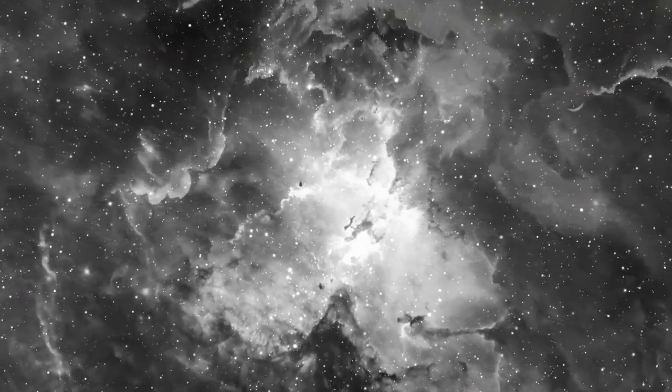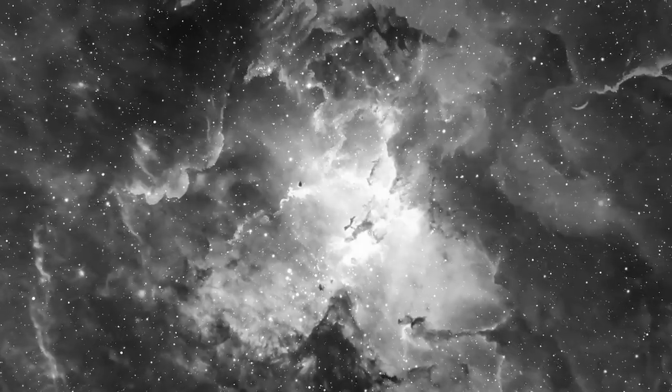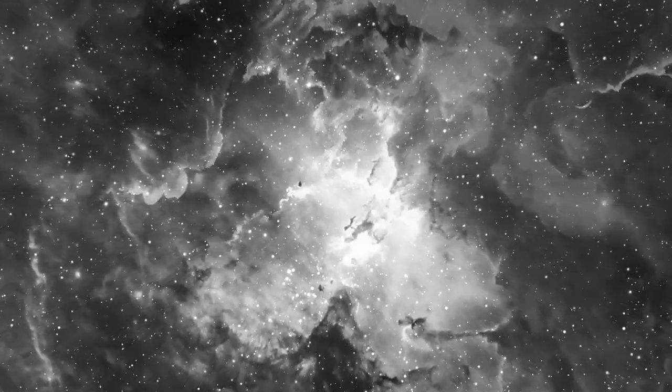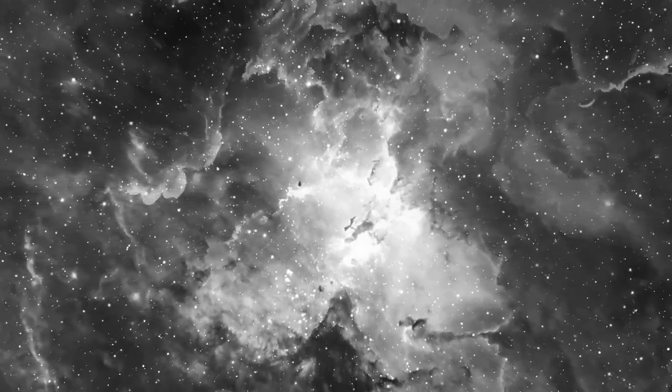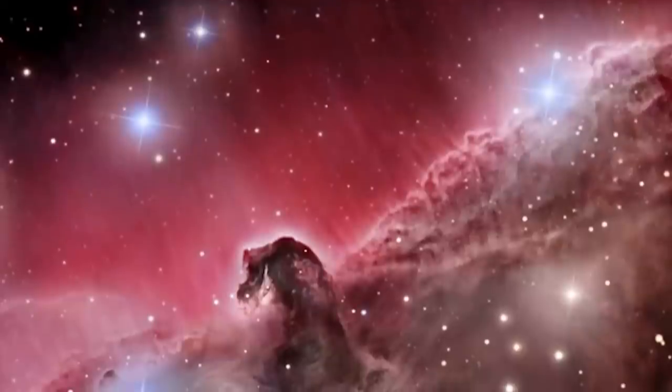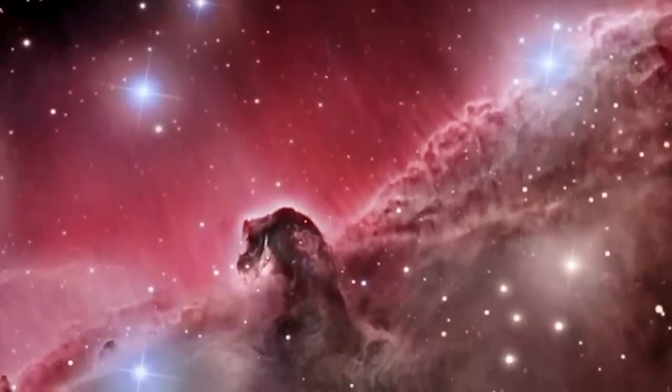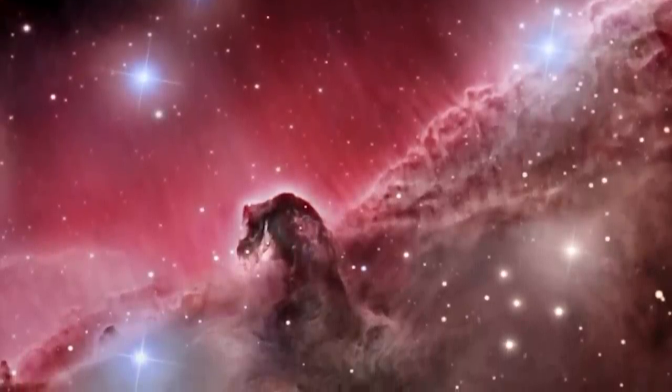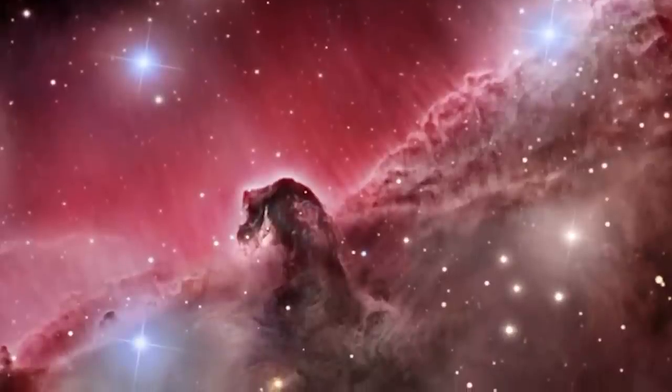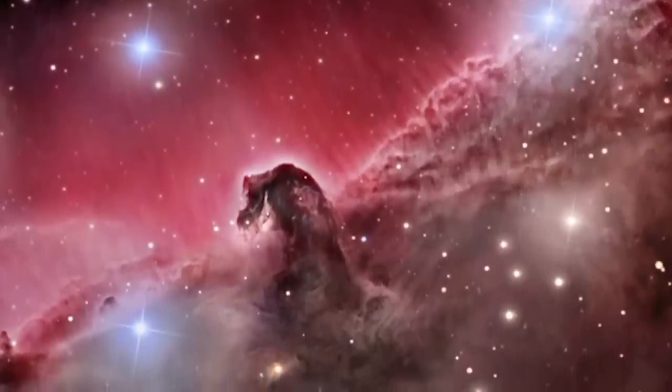This is the case of the Horsehead Nebula, located in the constellation of Orion. This dark nebula is next to a bright nebula. The latter gives a red color to the hydrogen that separates them. The Horsehead Nebula, composed of a dense cloud of gas and dust, stands out gracefully against this red background.